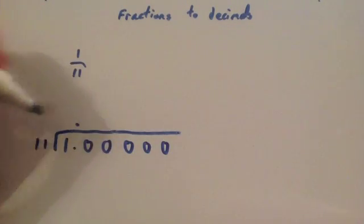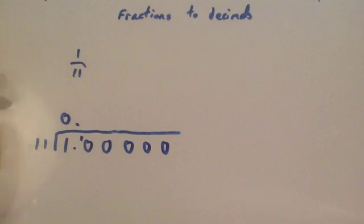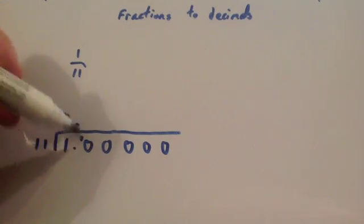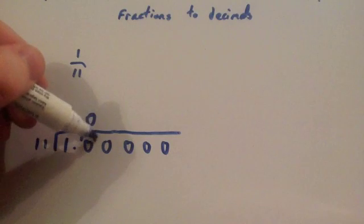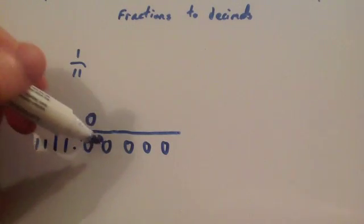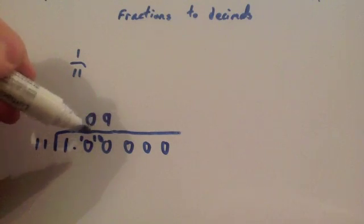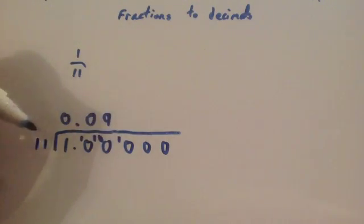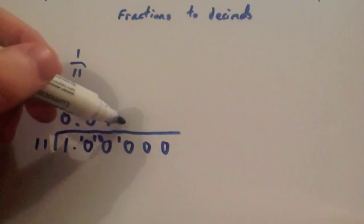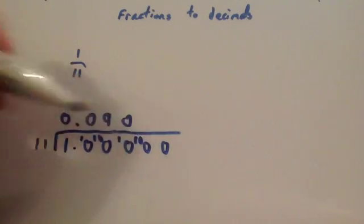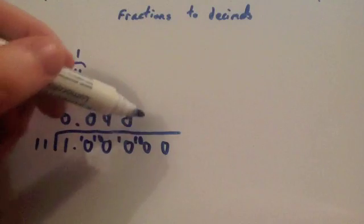So, 11 into 1 doesn't go. Remainder 1. 11 into 10 doesn't go. Remainder 10. 11 into 100. Well, 9 elevenths is 99. So, it goes in 9 times. And because that's 99, the remainder would be 1. 11 into 10 doesn't go. Remainder 10. 11 into 100 goes 9 times.